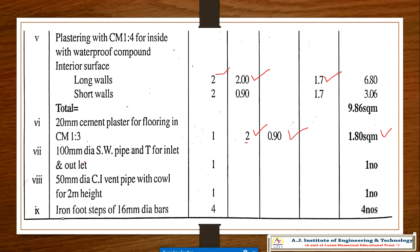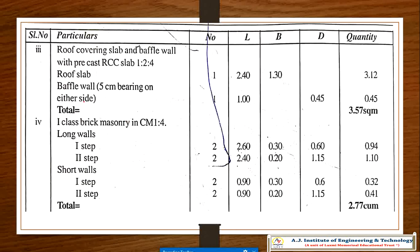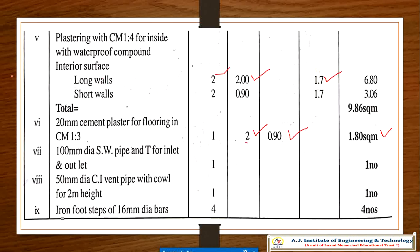Another quantity is a 100 mm diameter SW pipe for the T-junction inlet and outlet — that is 1 number. It is directly available in the market, so no need to calculate volume or area. You take the number, apply the market rate, and multiply to get the cost for estimation.